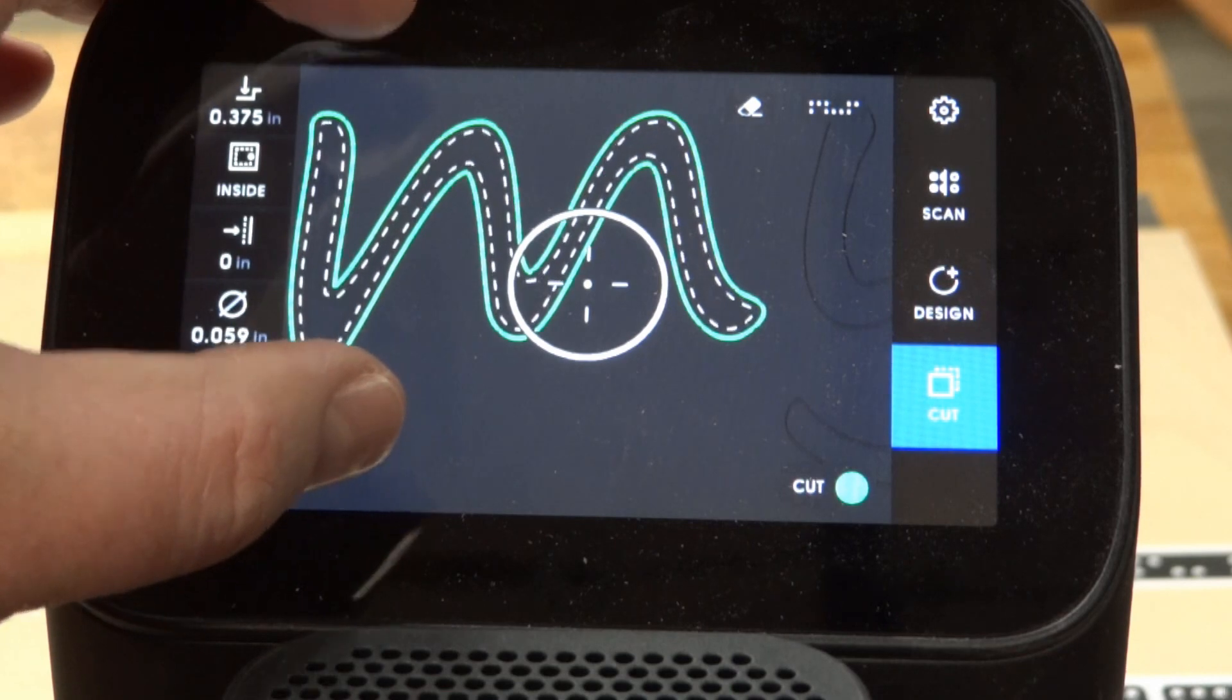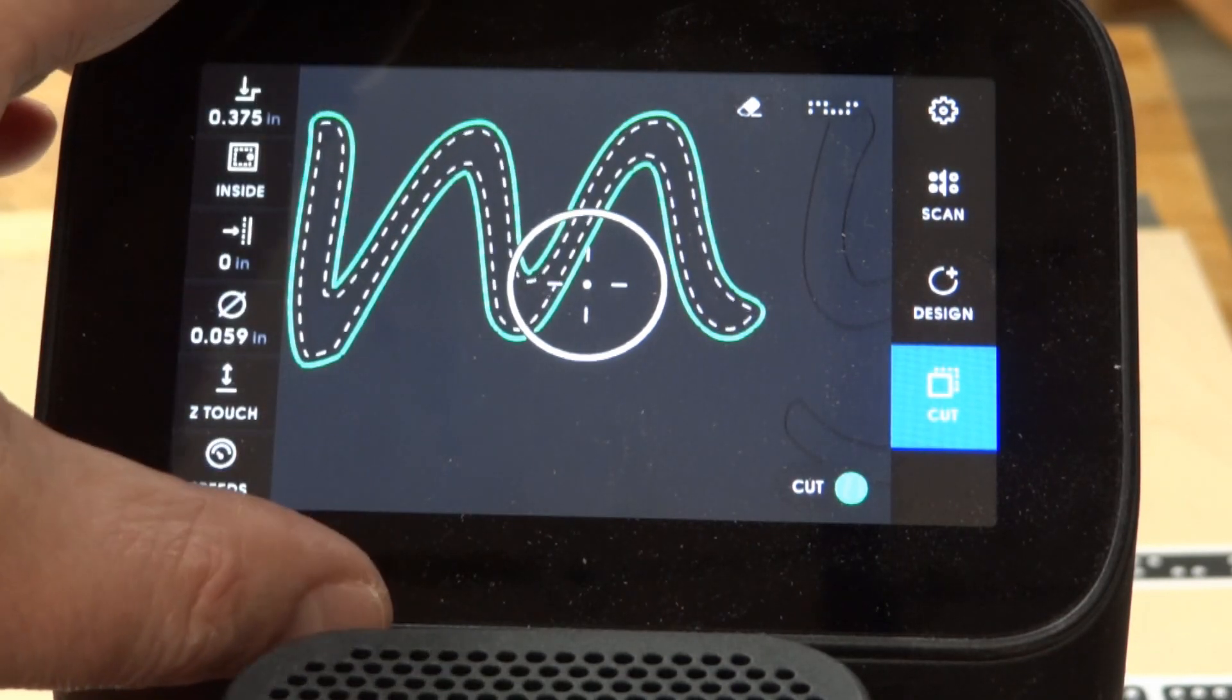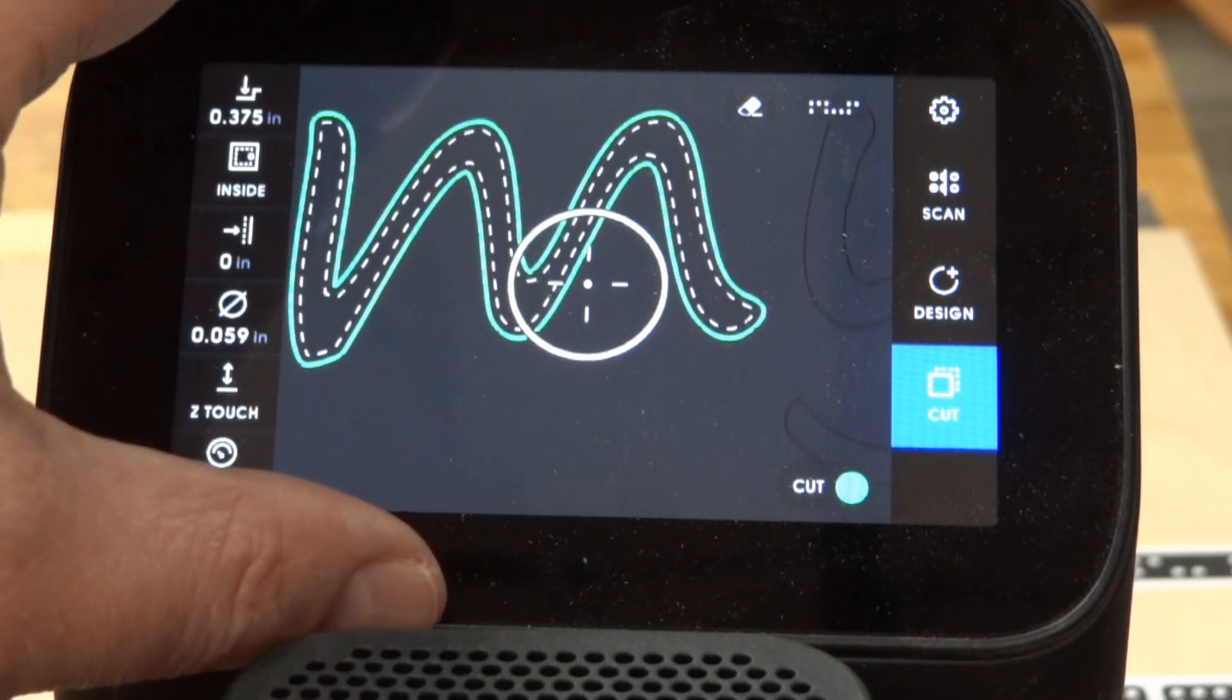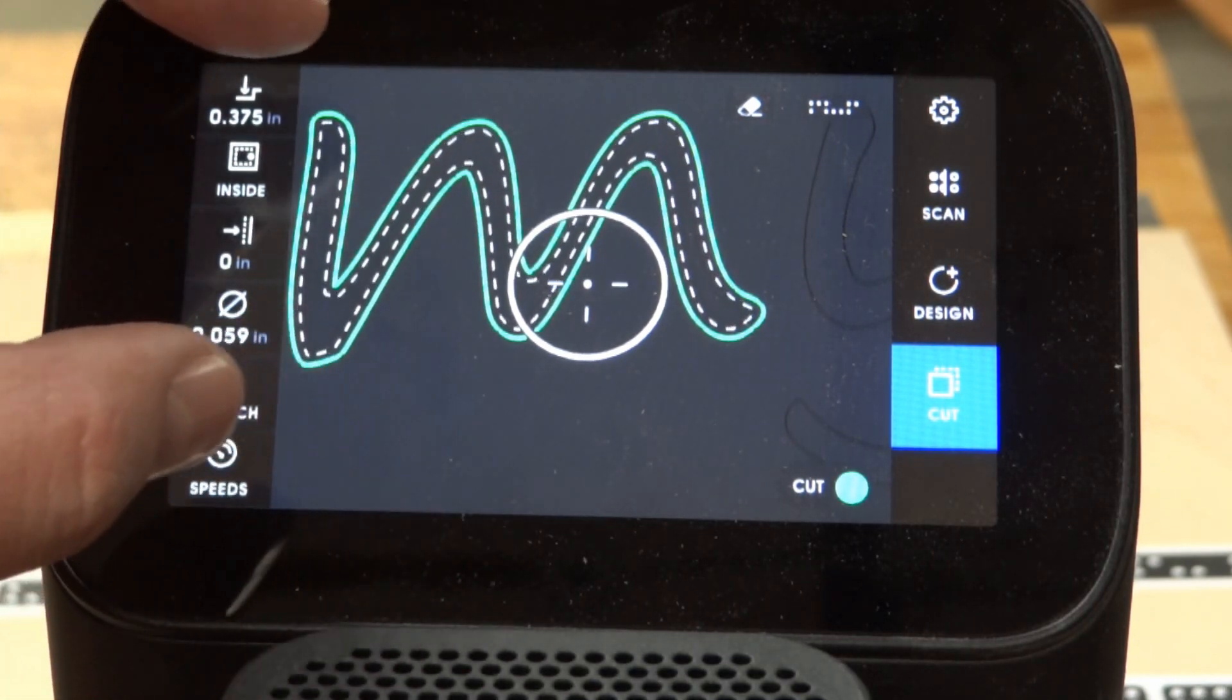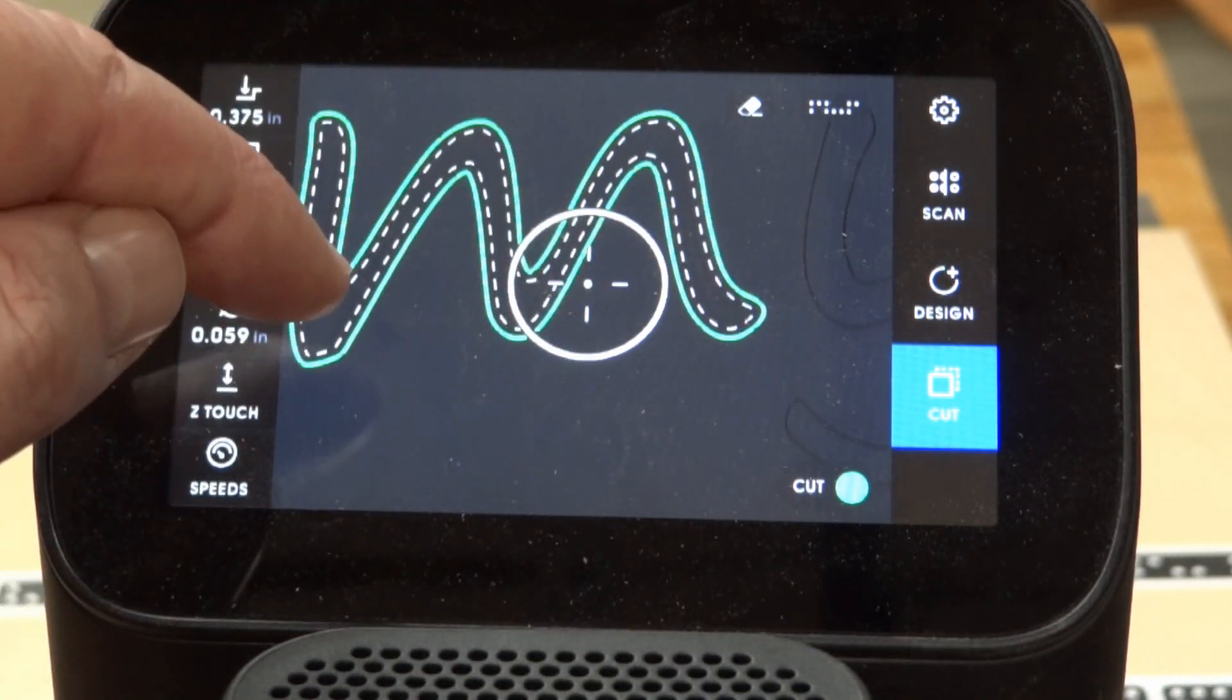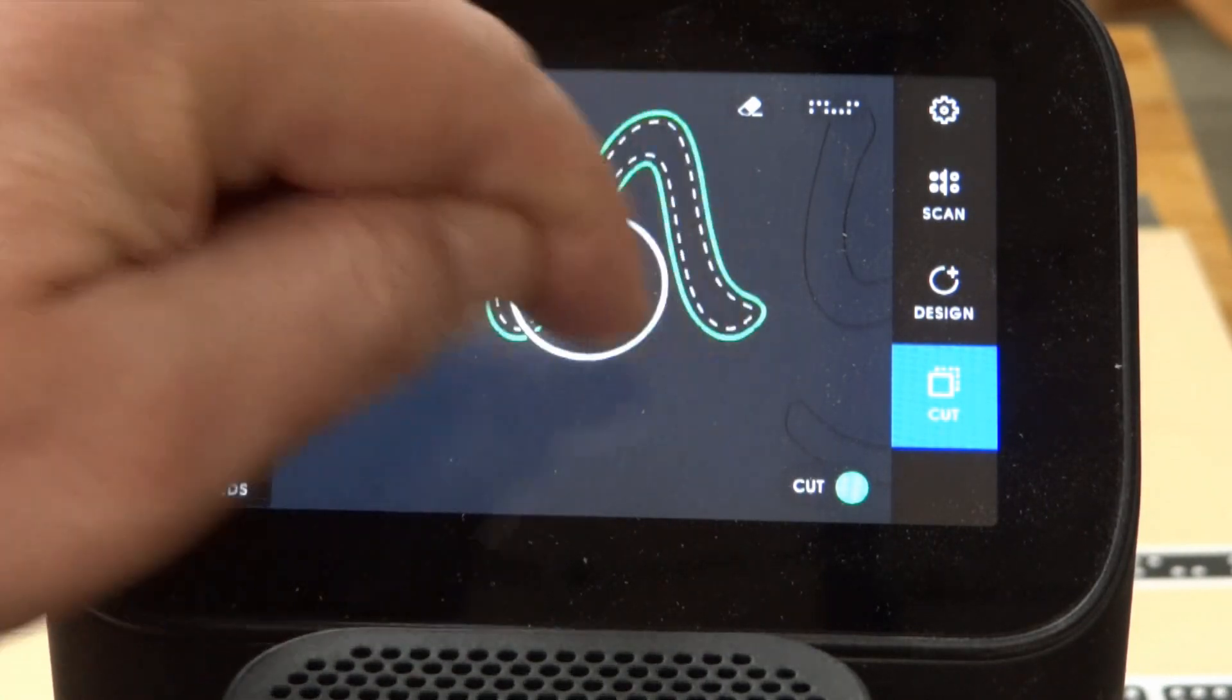So I took a font right out of how you choose a font in a word package or something like that and turned it into a path. So it takes the font itself, the letter, and then turns it into a set of shapes.